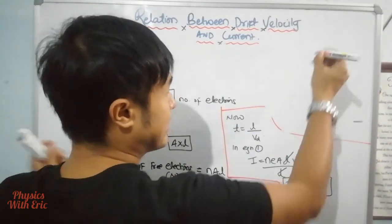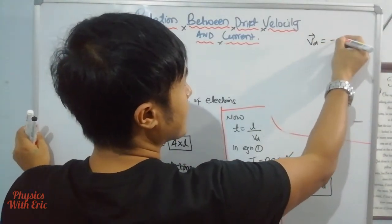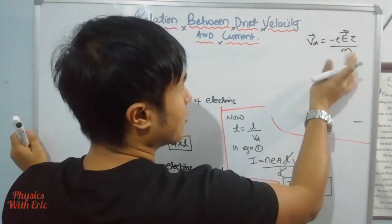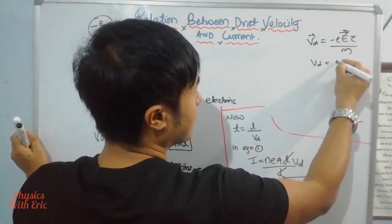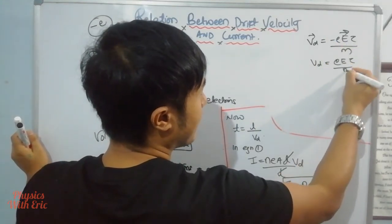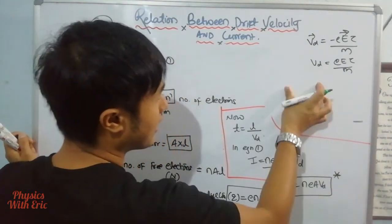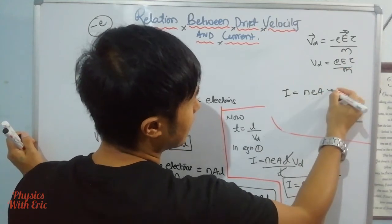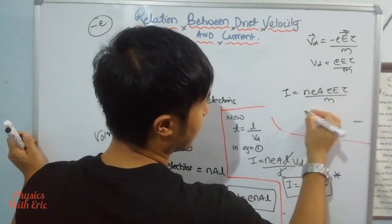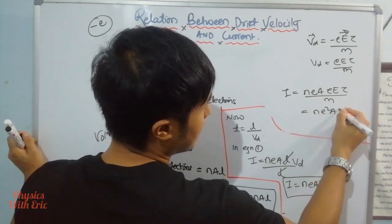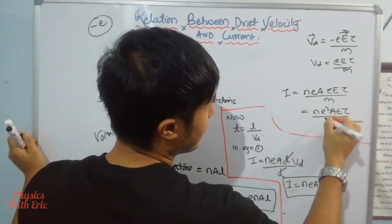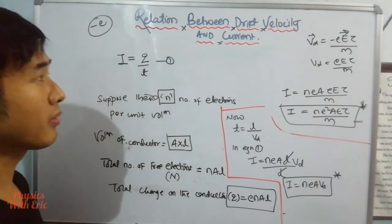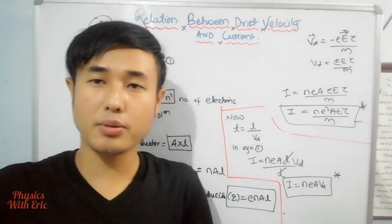The drift velocity is given by Vd equals e tau by m in magnitude. Putting this into the equation, I equals n e A times e tau by m, or I can simply write I equals n e squared A tau by m.